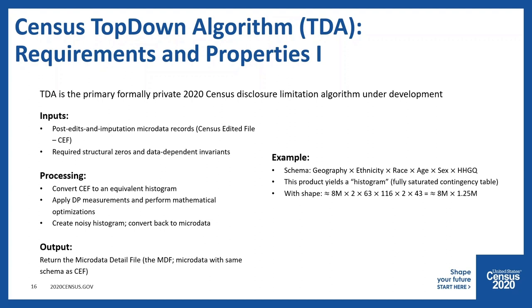The DP part is basically very straightforward. It is the requirement to use the conventional estimator — the tabulation system from the Census Bureau — to produce statistics in their conventional tabulated form that is the monumental lift. Using estimates for the 2020 Census, we're taking differentially private measurements on approximately 8 million times 1.25 million data items — several billion differentially private measurements — that feed an optimization problem resulting in a recognizable microdata file. The public versions are called privacy protected microdata files, the output of the complete 2020 DAS DP plus post-processing.